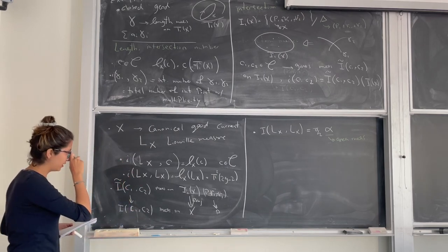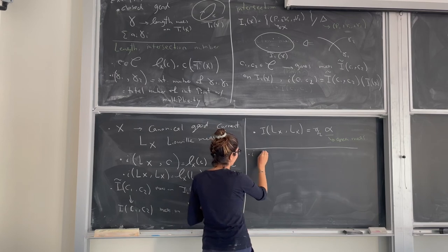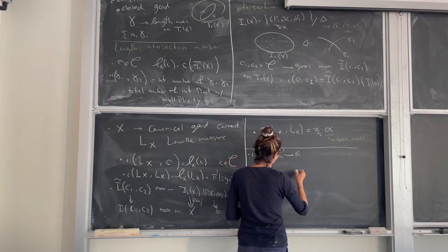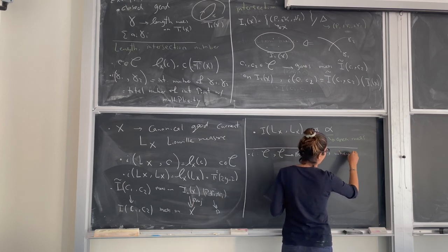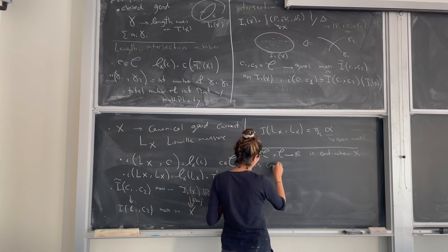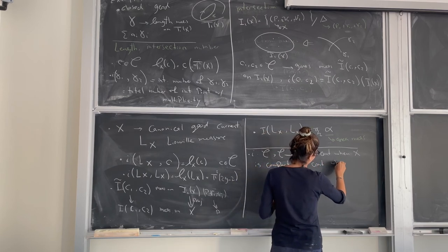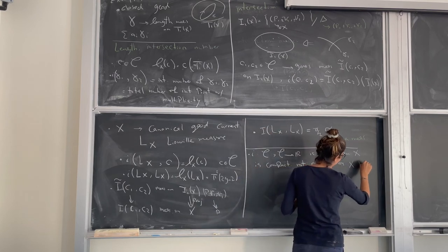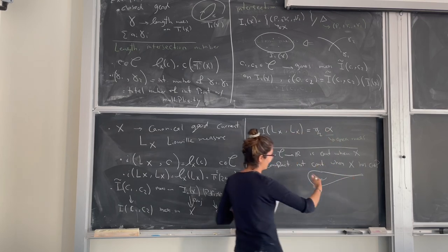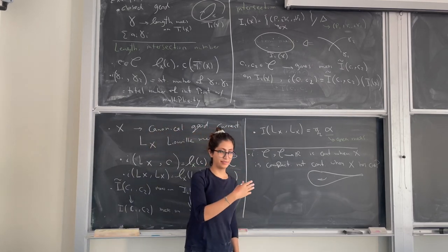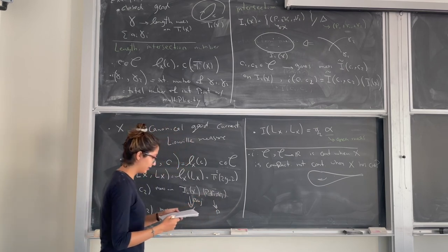One other thing to mention about the intersection number: as a function on pairs of geodesic currents, it is not continuous in general. It is continuous when X is compact, but not continuous when X has finite volume with cusps. When the surface has cusps, the intersection number may behave differently and fails to be continuous. This is an instructive exercise to understand why continuity fails in that case.